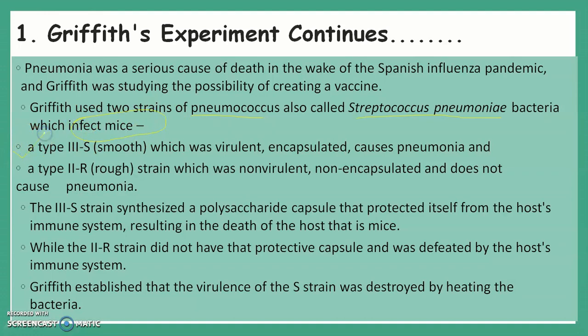The S strain synthesizes polysaccharide that protects itself from the host immune system, which causes the death of the host (the mice). The R strain does not have the protective capsule and is defeated by the host immune system and gets killed, so it does not cause pneumonia. Griffith established that the virulence of the S strain was destroyed by heating the bacteria.